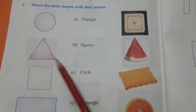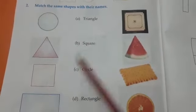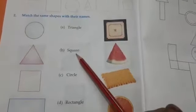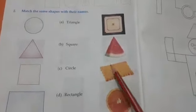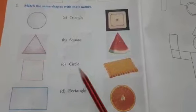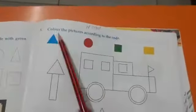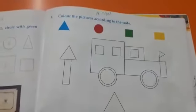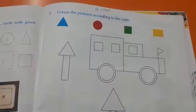Circle, triangle, square, rectangle. Color the pictures according to their color: triangle blue color, circle red, square green, and rectangle yellow.